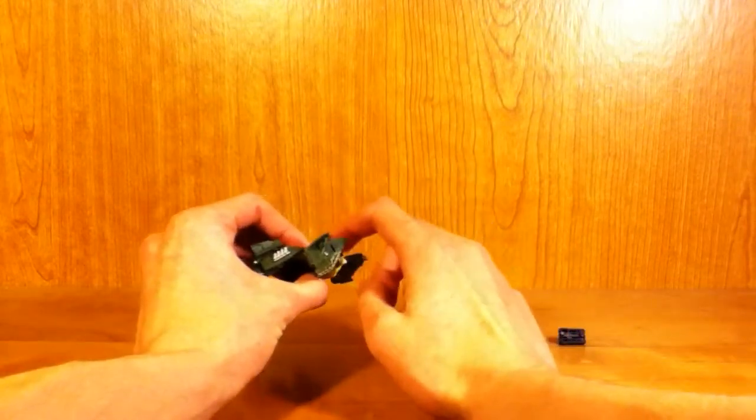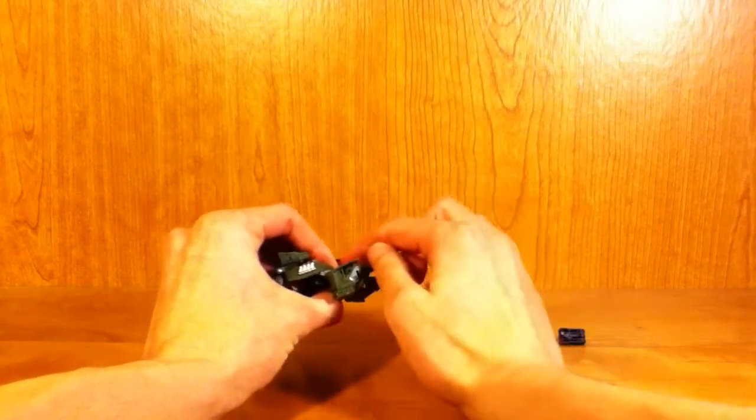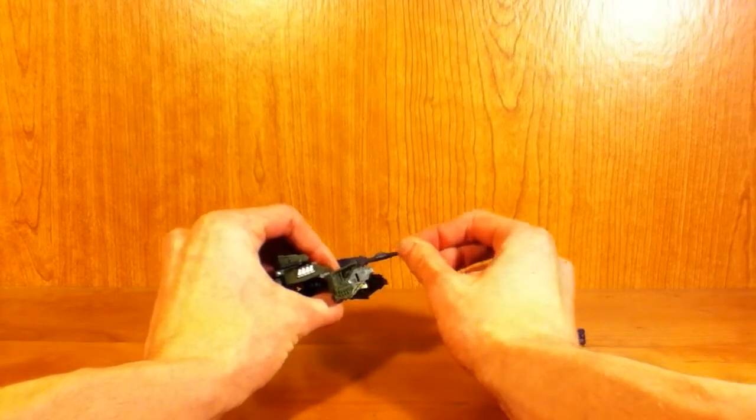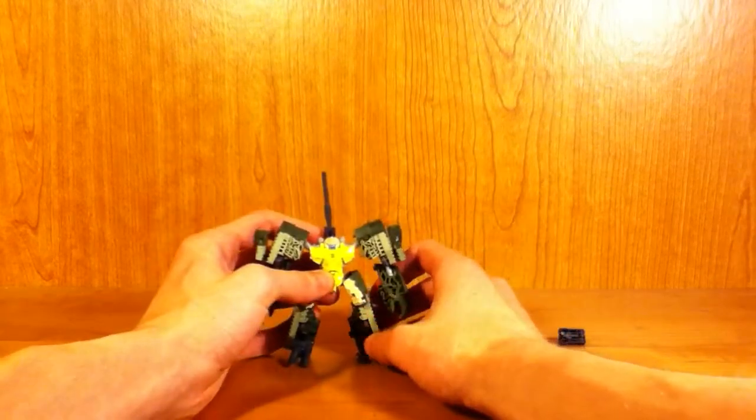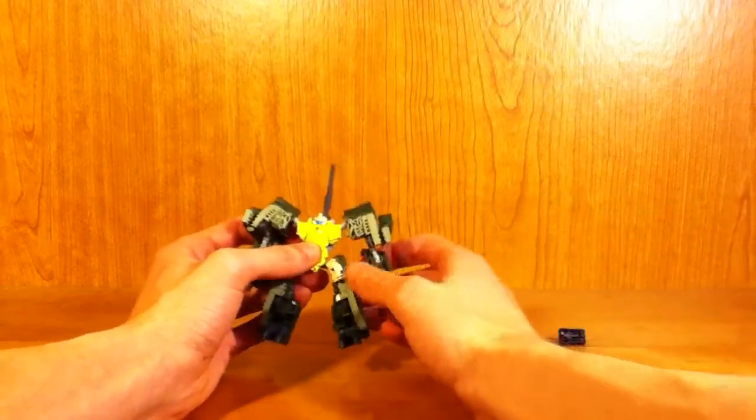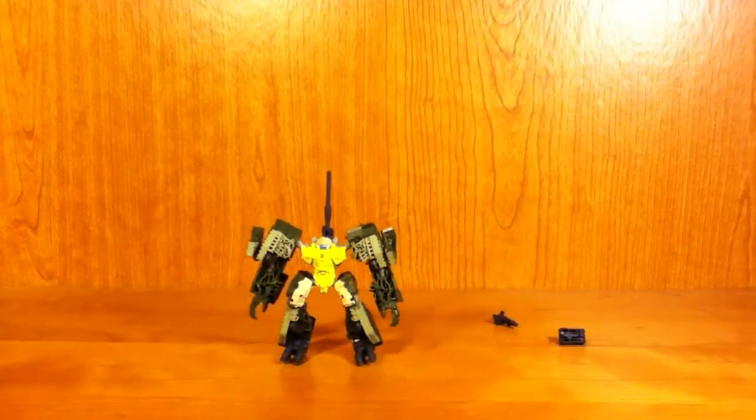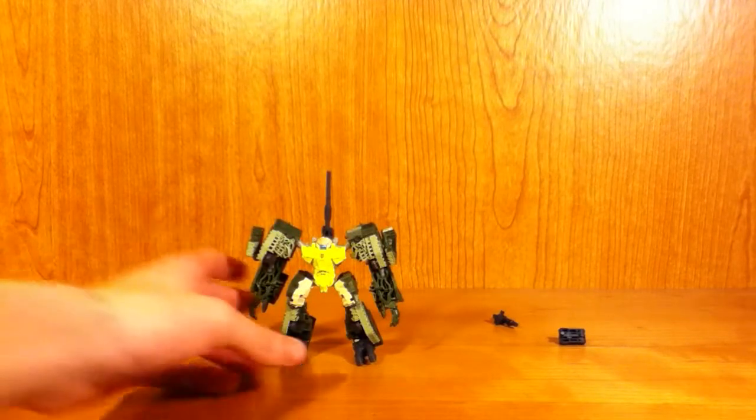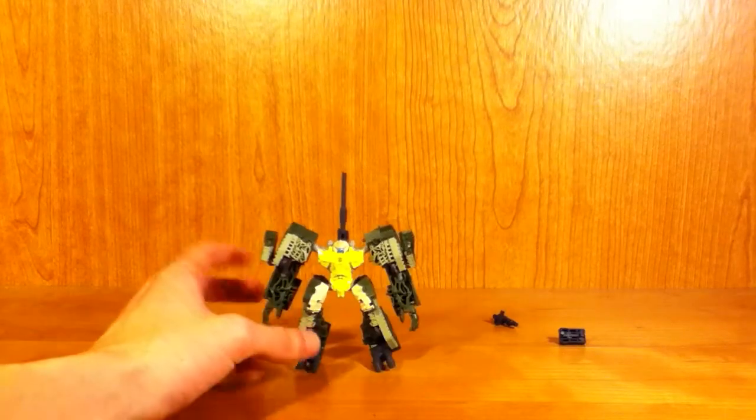I do kind of wish that they had put a pin joint in it, so that it could actually slide down, like a slider joint, so that the turret could collapse down into his back a little bit more. I'm okay with it as it is, but still, I think it would have been nice if they had managed to find a way to push it down a little bit more. But, oh, what are you going to do?